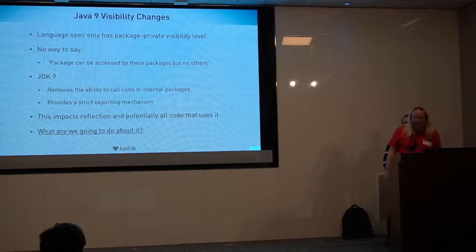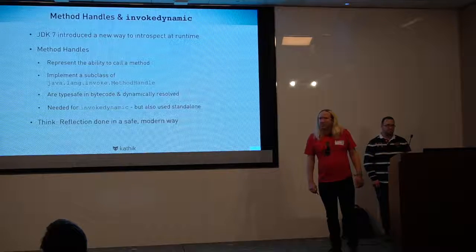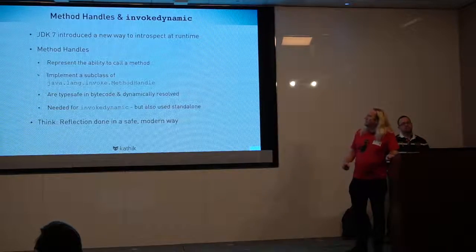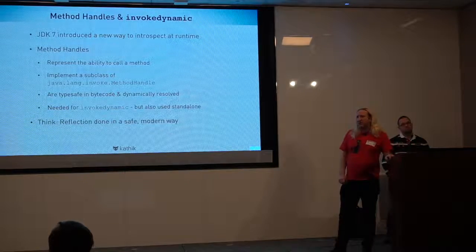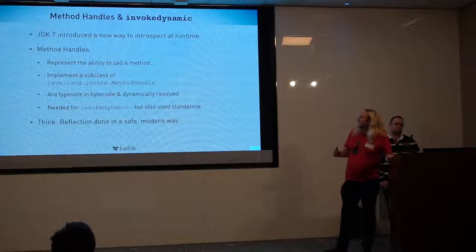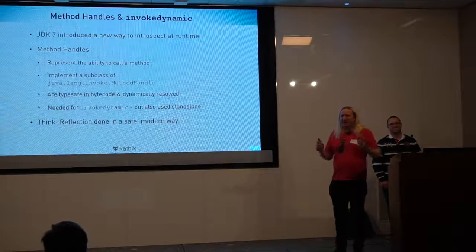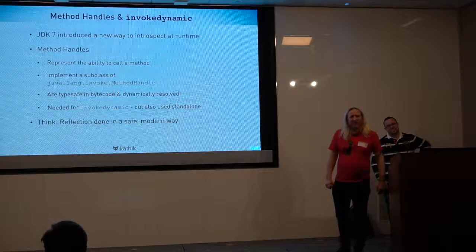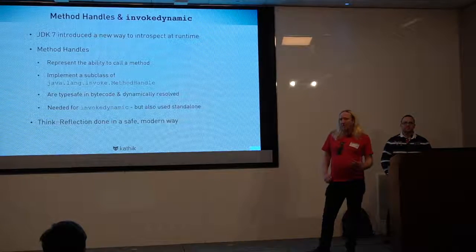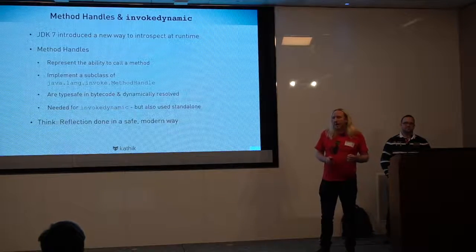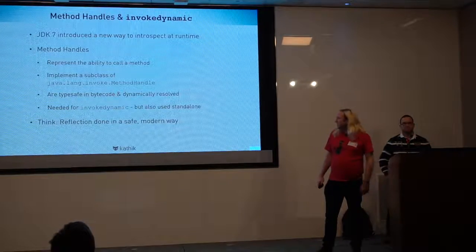Method handles came out in Java 7. They represent a new way of thinking about how to introspect — basically reflection done in a safe and modern way. They take away the old setAccessible hack where you'd call this magic method to say 'don't worry about access control anymore.' With method handles, we actually have the ability to remain compliant with access control at runtime without sidestepping the security manager.